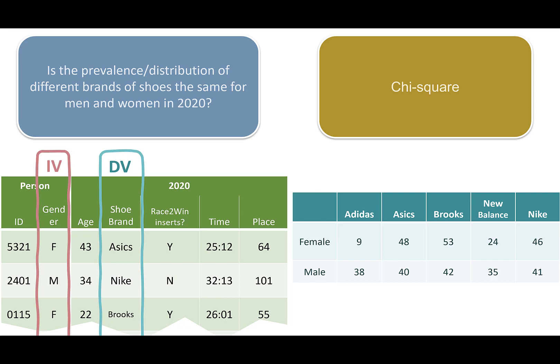This is where you run a chi-square test. The results from that would tell you: is the difference we think we see between the distribution — the relative prevalence between males and females — is it statistically significant?